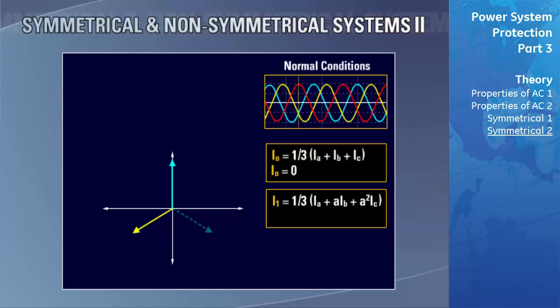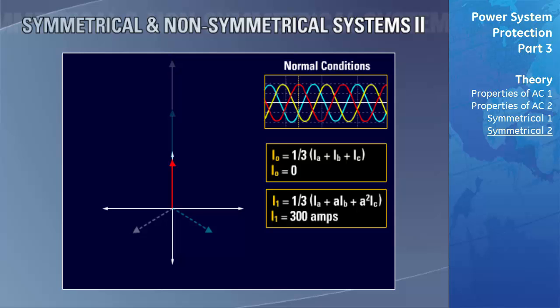After the three aligned phases are added and divided by 3, since all three are of the same magnitude, the positive sequence equals 300 amps. Negative sequence uses the formula (Ia + A²·Ib + A·Ic) / 3. Phase B has an A-squared operator, rotating 240 degrees to phase C's position; phase C has an A operator, rotating 120 degrees to phase B's old position. Adding these three vectors results in a negative sequence of 0 amps. As predicted by Fortescue, only positive sequence current exists under balanced conditions.